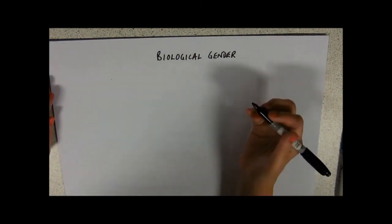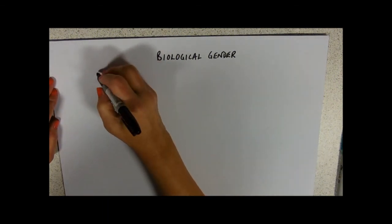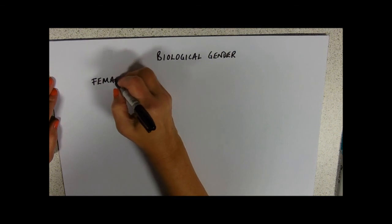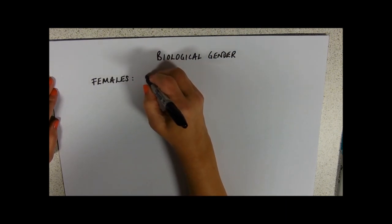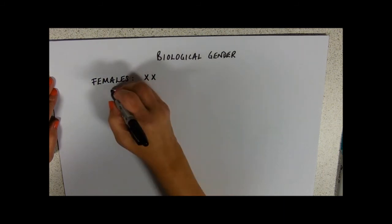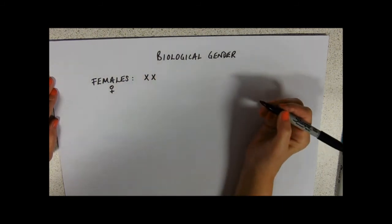So, the thing that I think just about everybody knows is that females have two X chromosomes and of course the symbol for female is that,